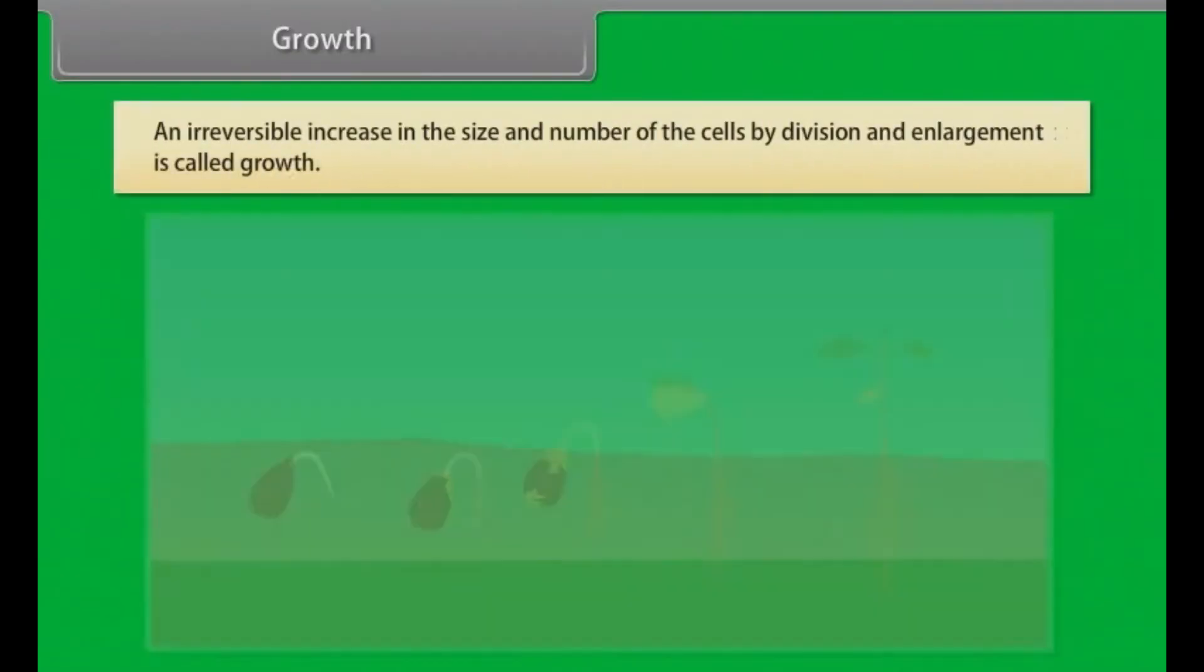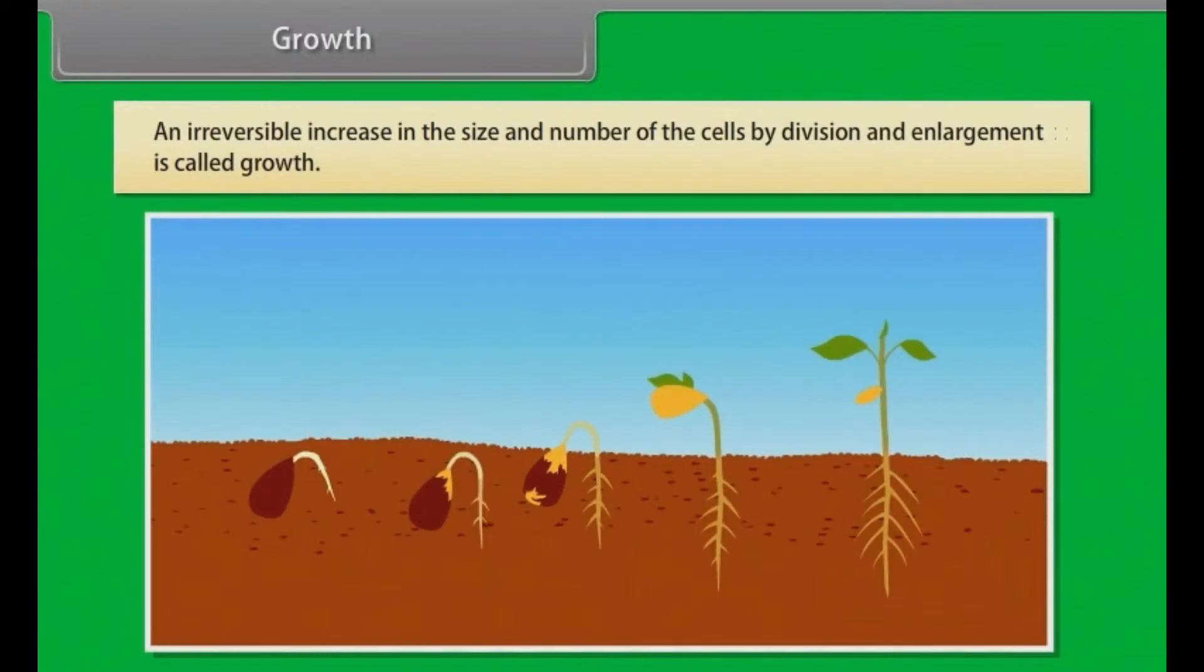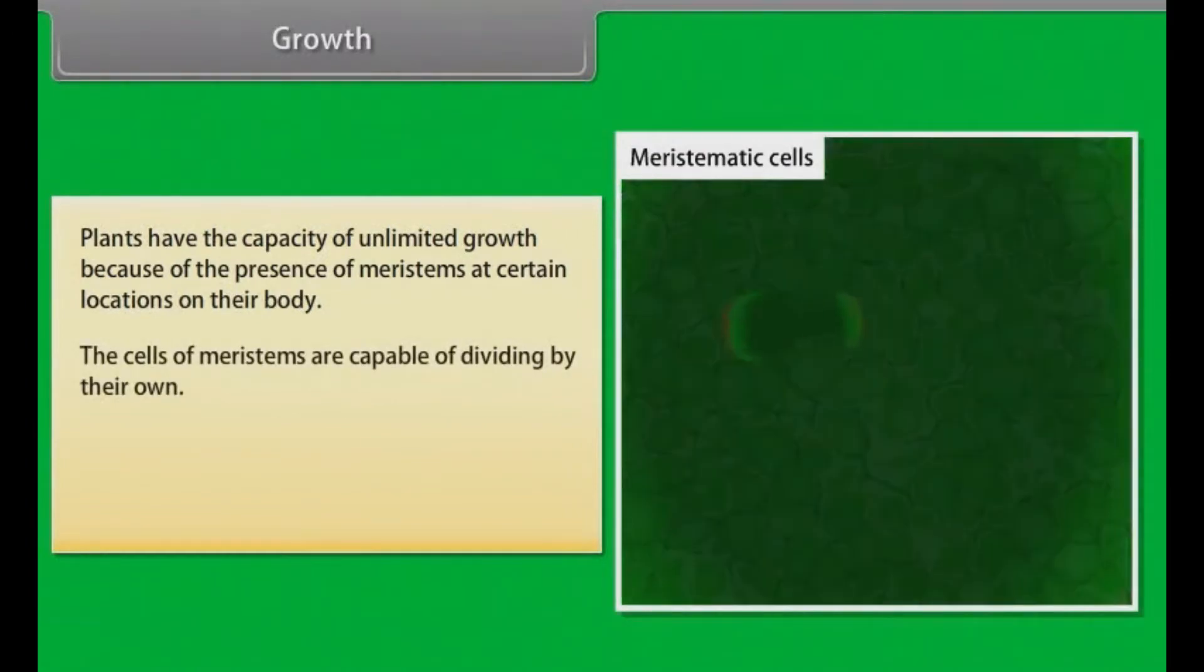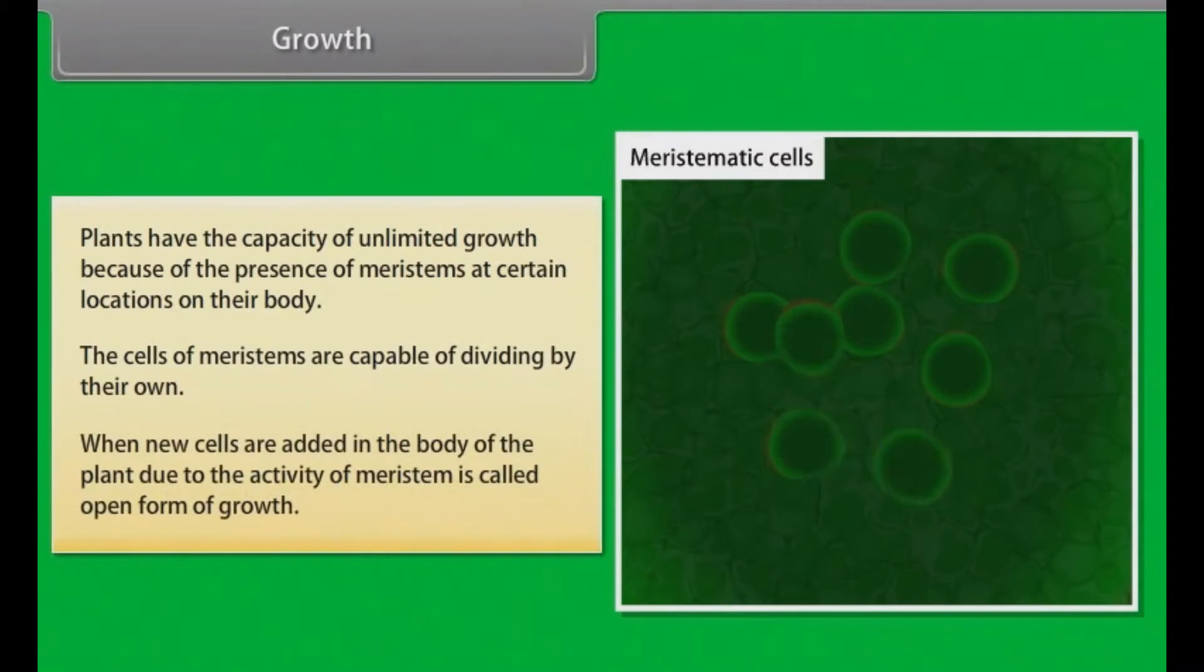An irreversible increase in the size and number of cells by division and enlargement is called growth. In plants, the growth generally is indeterminate. Plants have the capacity of unlimited growth because of the presence of meristems at certain locations on their body. When new cells are added in the body of the plant due to the activity of meristem, it is called open form of growth.